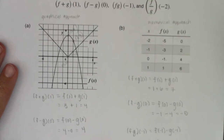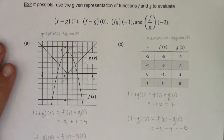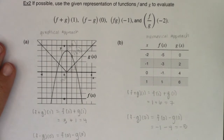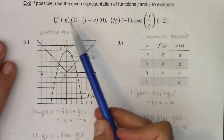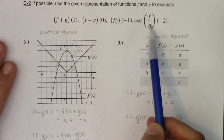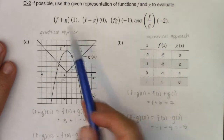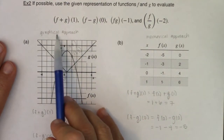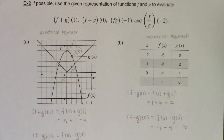So with all of that, we've done algebraic operations on functions — the sum, the difference, the product, and the quotient. In example one we did them analytically, and in example two we looked at them graphically and numerically. With that, we're going to head on to example three and take a look at composing functions. I'll see you in a few, bye!